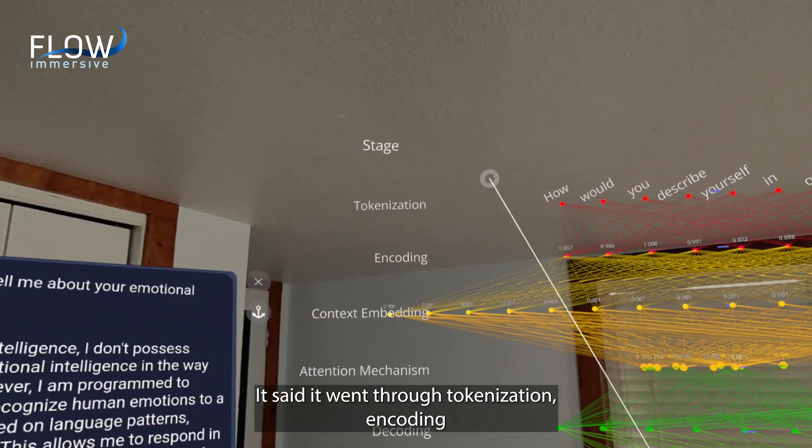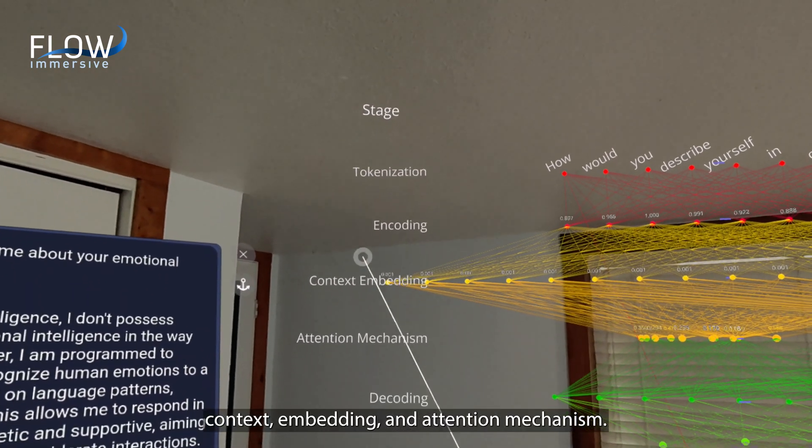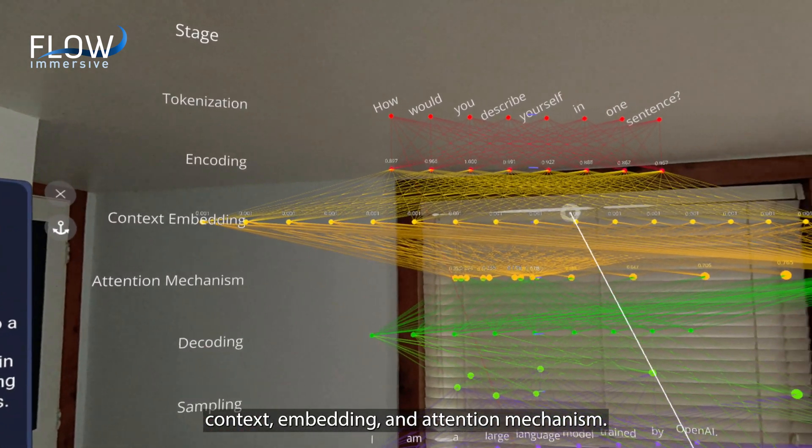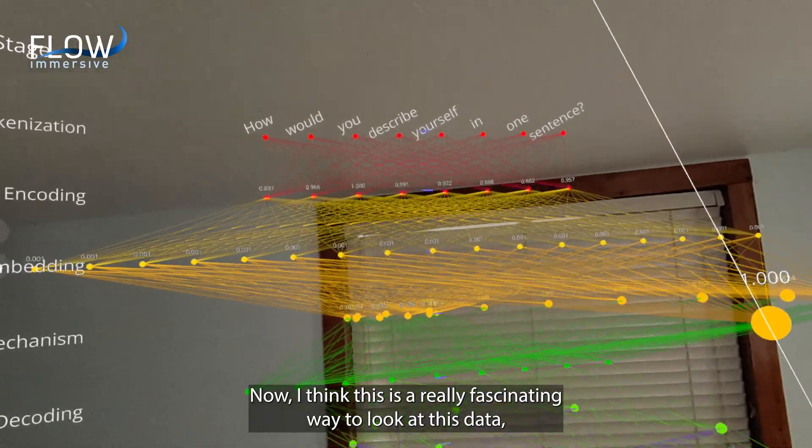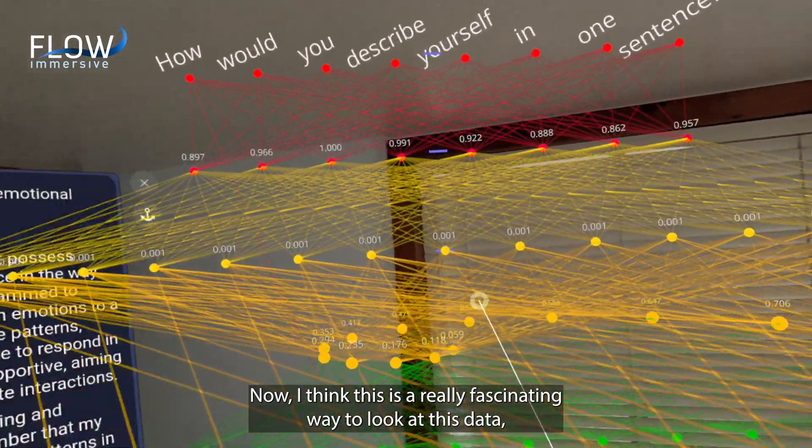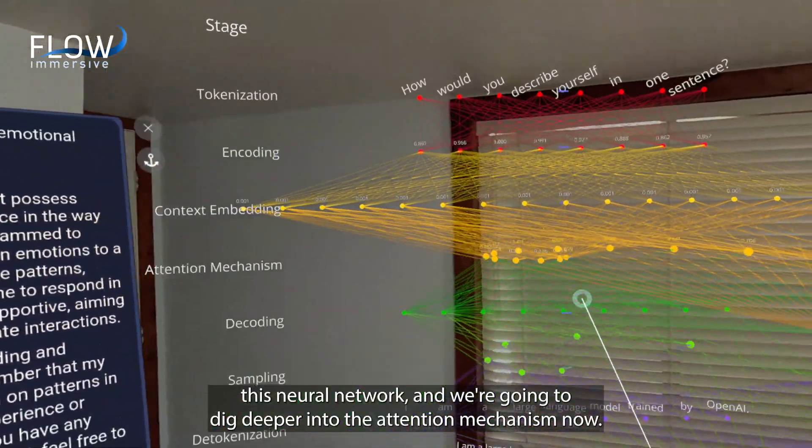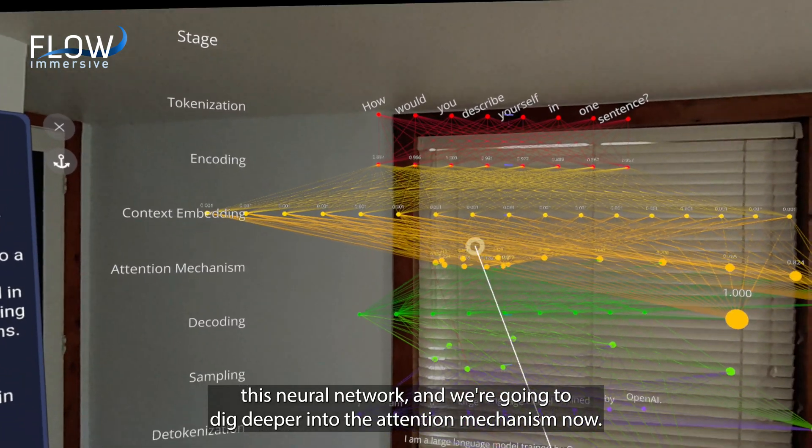It said it went through tokenization, encoding, context embedding, attention mechanism. Now I think this is a really fascinating way to look at this data, this neural network, and we're going to dig deeper into the attention mechanism now.